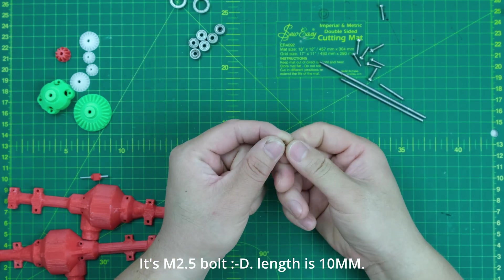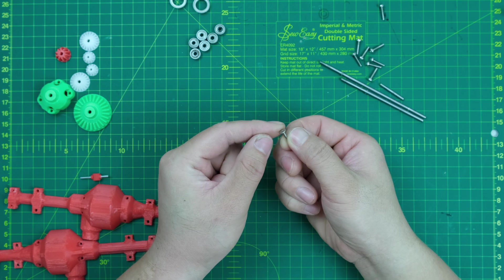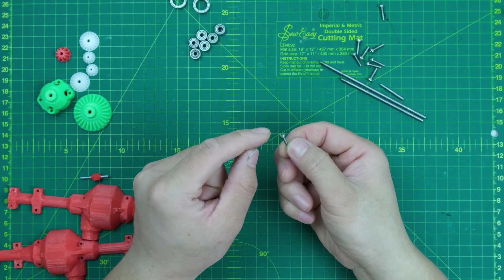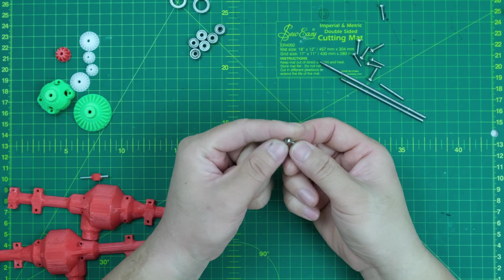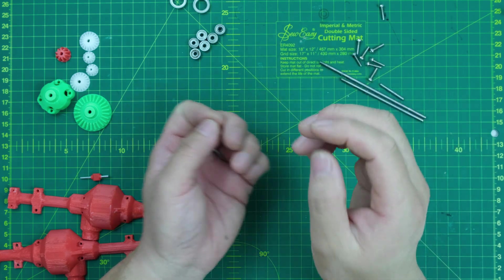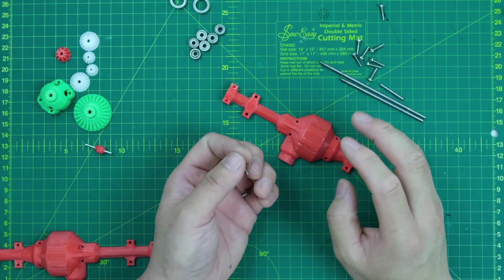You need bolts that are 10mm in length and 2.5mm in diameter. You may notice that I use two different bolts, one is flat head and the other is round head. Don't worry about this, just buy the round head one. This is gonna work well in this project.